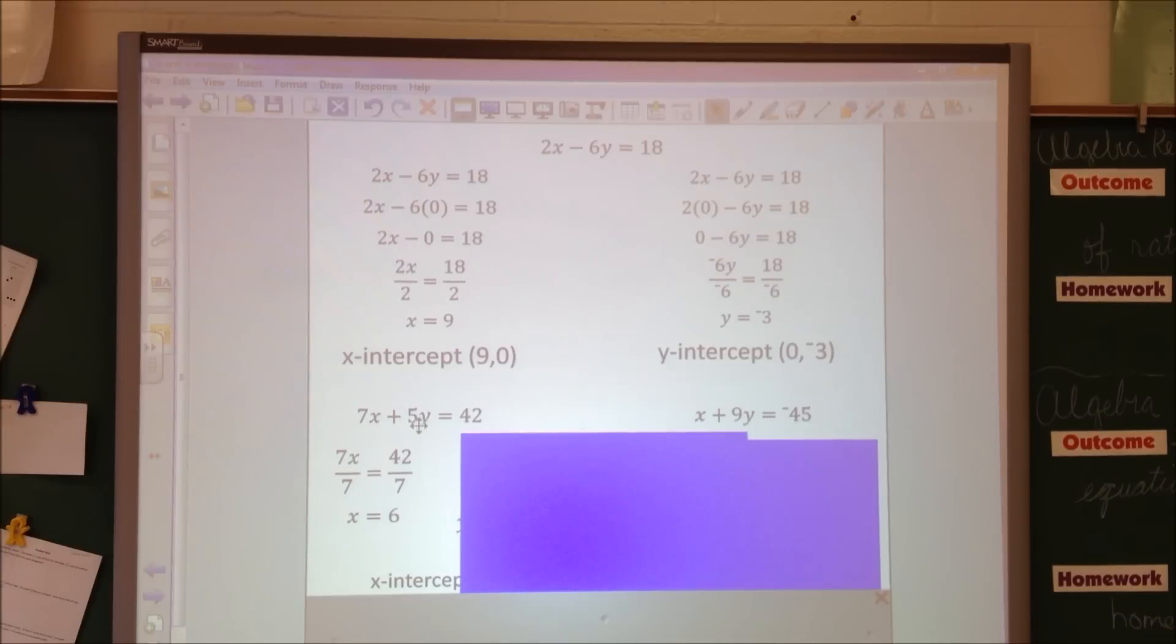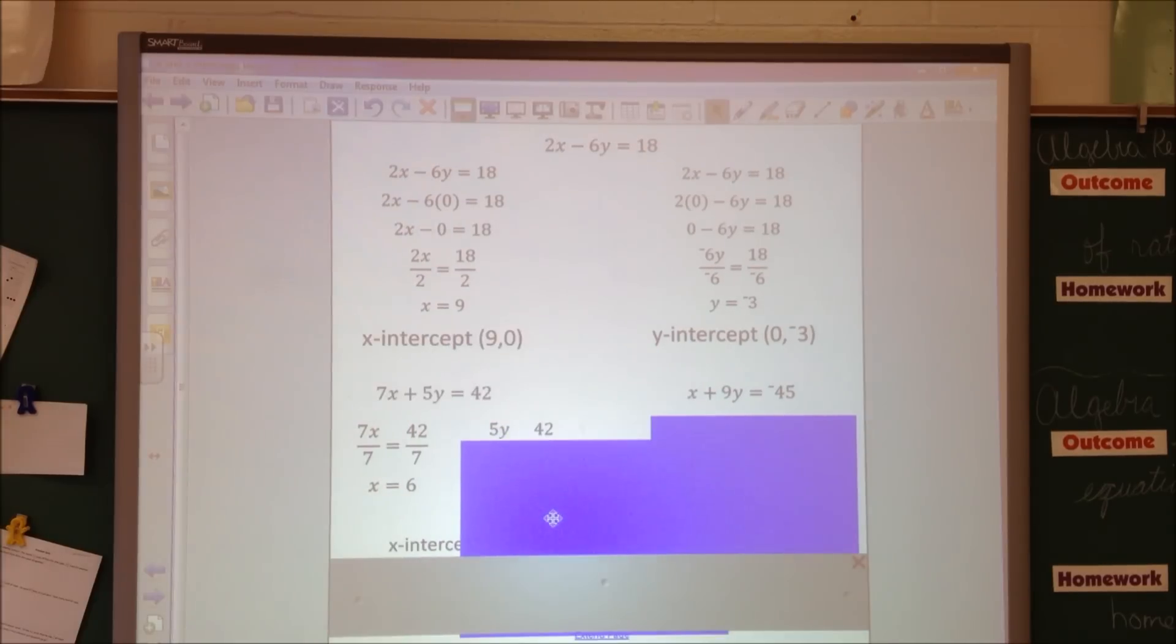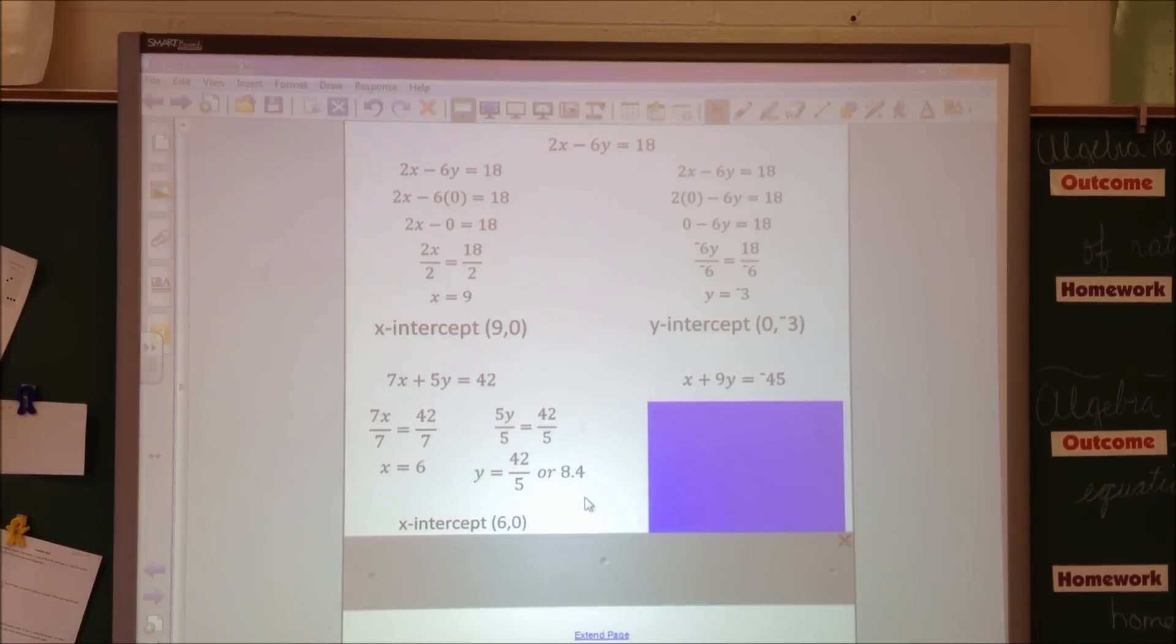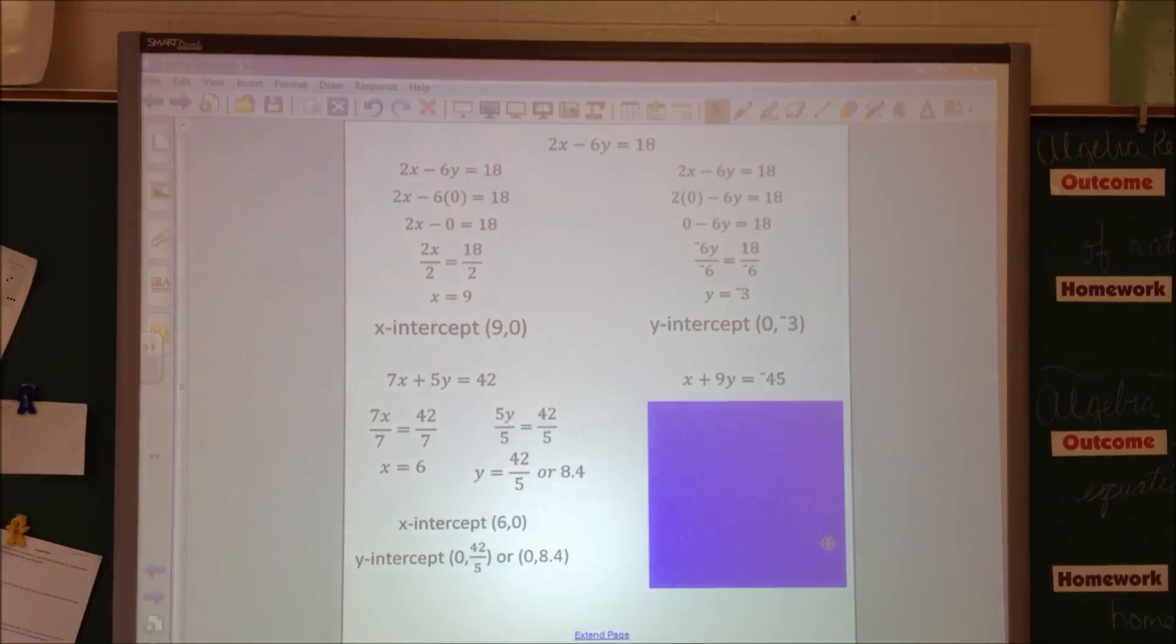Now for the y, remember x equals 0, so if I just cover this up, it says 5y equals 42. And when I divide both sides by 5, I get an improper fraction. I can leave it as 42 over 5, or I can change it to 8.4. So for this, my y-intercept is 0, 42 over 5, or 0 and 8.4.